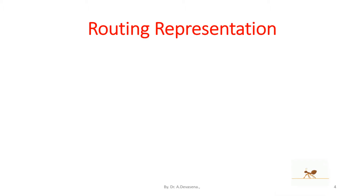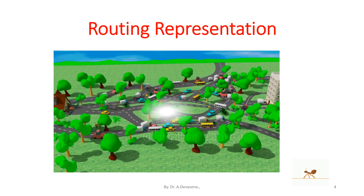A routing representation analogy is shown here. The vehicle starts from the source and has to reach the destination. For reaching the destination, the vehicle may take several routes — that is, the vehicle may take the optimum path to reach the destination, as represented here.